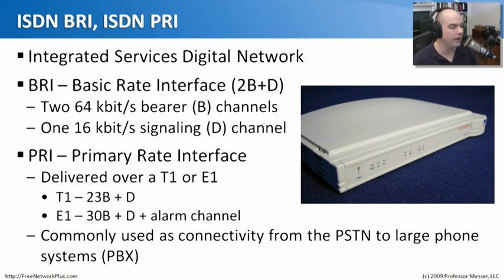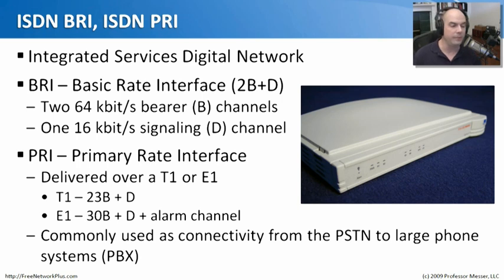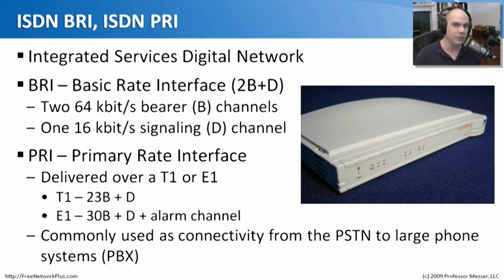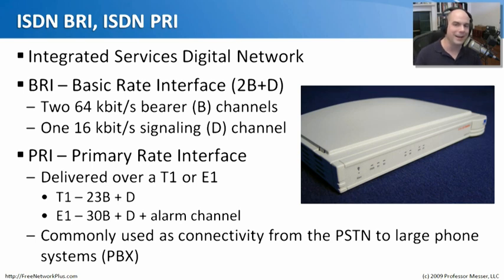Another type of ISDN is PRI — Primary Rate Interface — brought into an environment on a T1 or E1. On a T1, you have 23 B channels and 1 D channel for signaling. E1 had 30 bearer channels, 1 D channel, and a separate channel for alarms, which is important on a WAN network. ISDN PRI is still seen in large environments that have a PBX — an internal phone system. It allows you to bring in an ISDN connection with 23 phone lines at once, rather than line by line, making it very efficient compared to individual analog links.